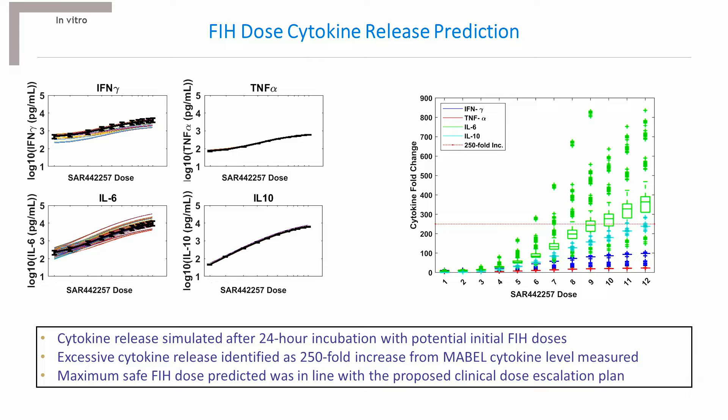The panel to the left shows the predicted dose-dependent changes in cytokine levels with increasing doses, while that to the right depicts cytokine fold increase from the corresponding measured MABEL cytokine levels. With the safety threshold for cytokine release identified as a 250-fold increase — indicated by the horizontal red dashed line — we were able to predict a maximum safe first-in-human dose that was well aligned with the proposed clinical dose escalation plan.